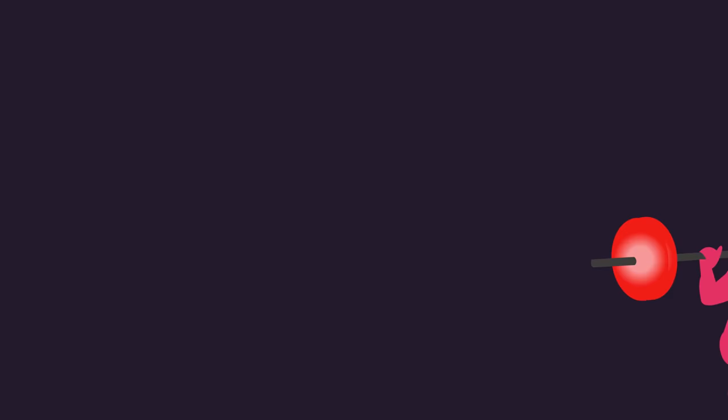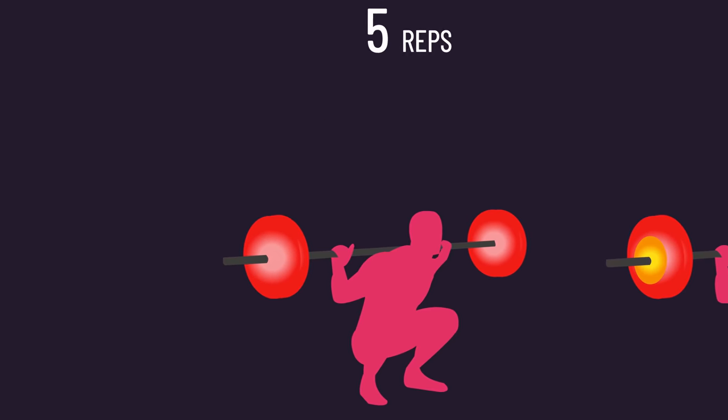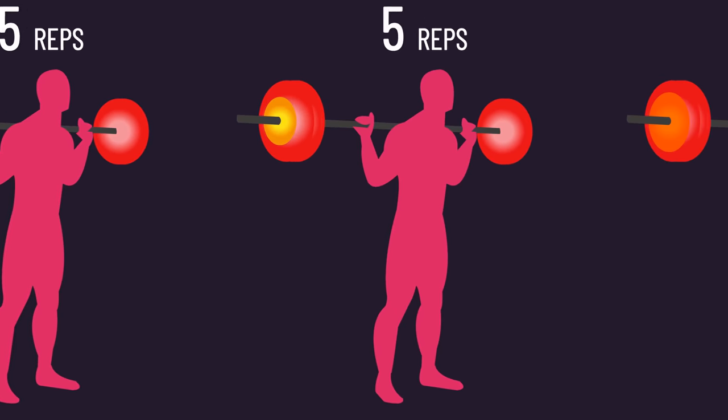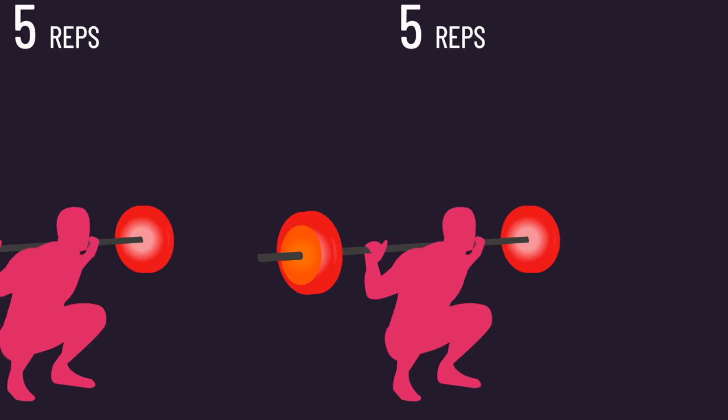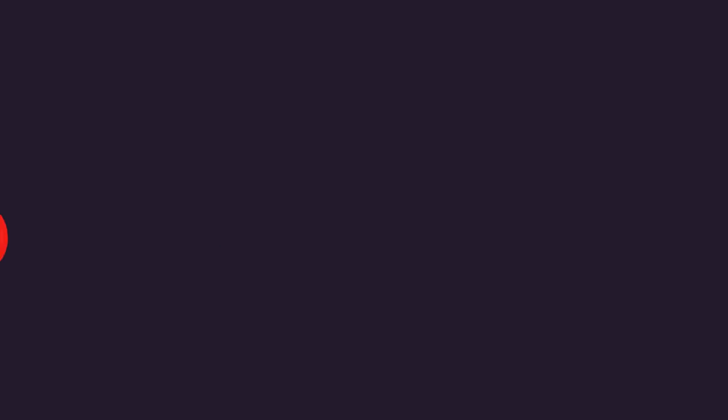Thus, it's likely that consistently training with heavier loads that permit 5 or fewer reps is a great idea if your goal is to max one rep max strength. And progressing load is needed to effectively do this across sessions.